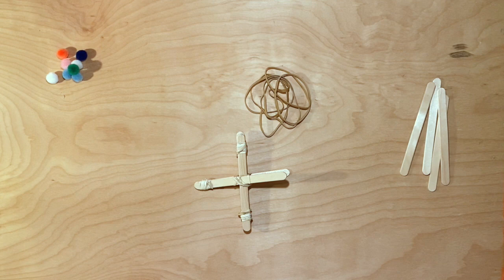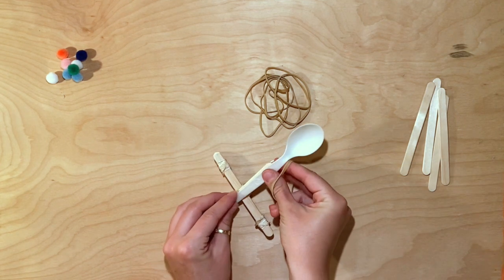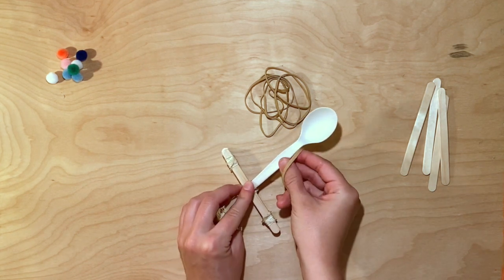Now we are going to take the plastic spoon and use a rubber band to attach it to the end of the stick.